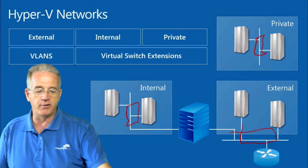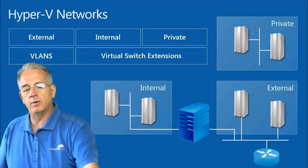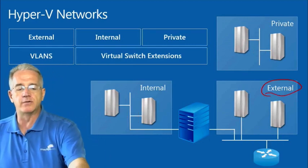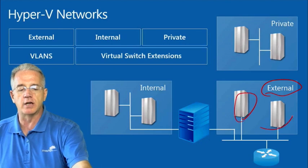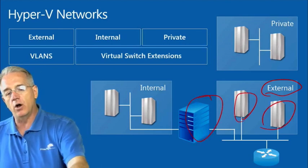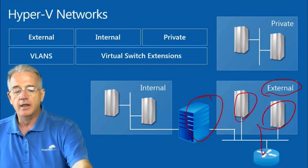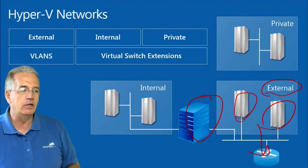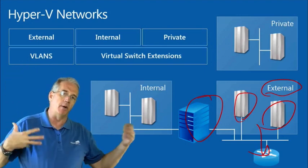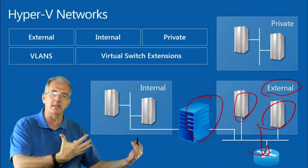Let's talk about the different types of networks. The first one is an external network. An external network means that virtual machines can talk to each other, they can talk to the host machine, and they can talk to your local area network.